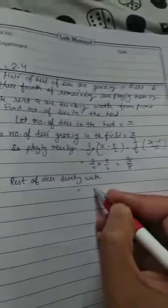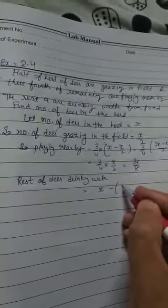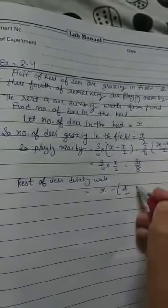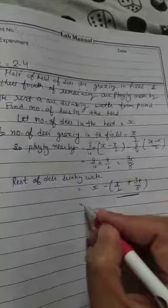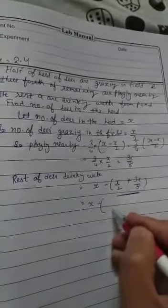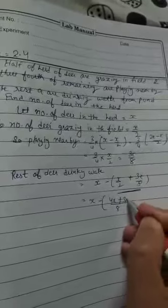That is total is x minus x upon 2 plus 3x upon 8. Take the LCM, 8. 4x plus 3x.